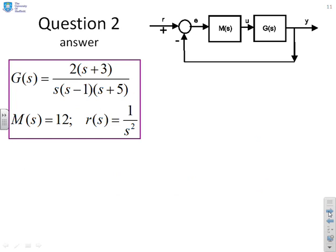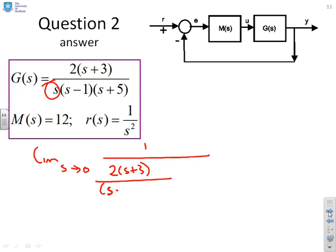Next one. Again, there's an integrator there, so I can use exactly the same technique. So I get the limit as s goes to zero of one over (2s+3) over (s-1)(s+5) times 12, which is going to give me minus five over six times 12.